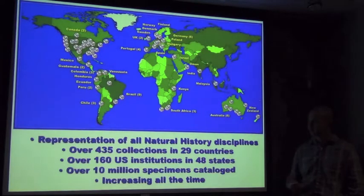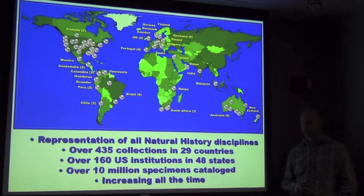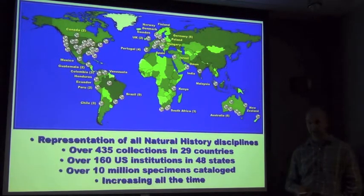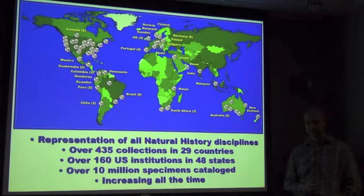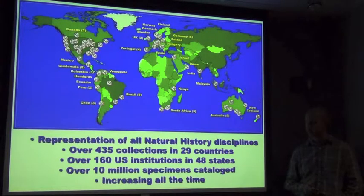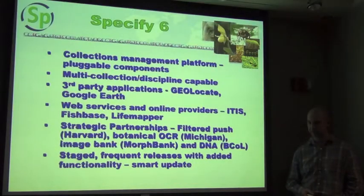We have a representative of all the natural history disciplines within Specify, with over 435 collections in 29 countries at the moment. Over 160 of those are US institutions in 48 states. We have about 10 million specimens catalogued in Specify at the moment, and all of those numbers are always increasing over time as more and more clients join Specify.